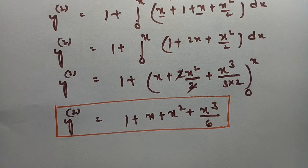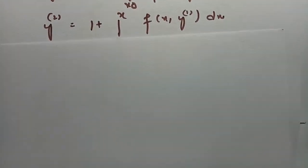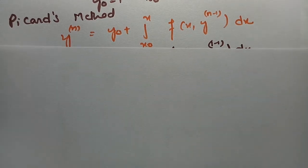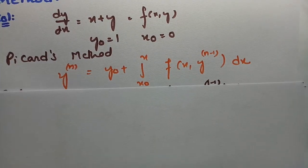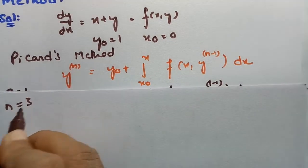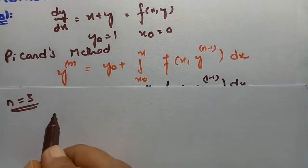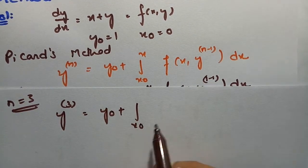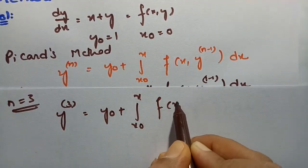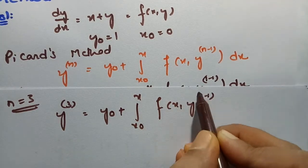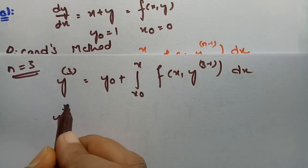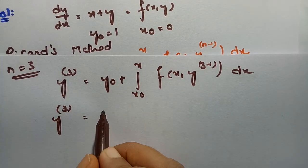Now we go with the third approximation. According to Picard's method, keeping n = 3, y₃ = y₀ + integral from x₀ to x of f(x, y₂) dx. So y₃ = 1 + integral from 0 to x of f(x, y₂) dx, where y₂ is the second approximation.